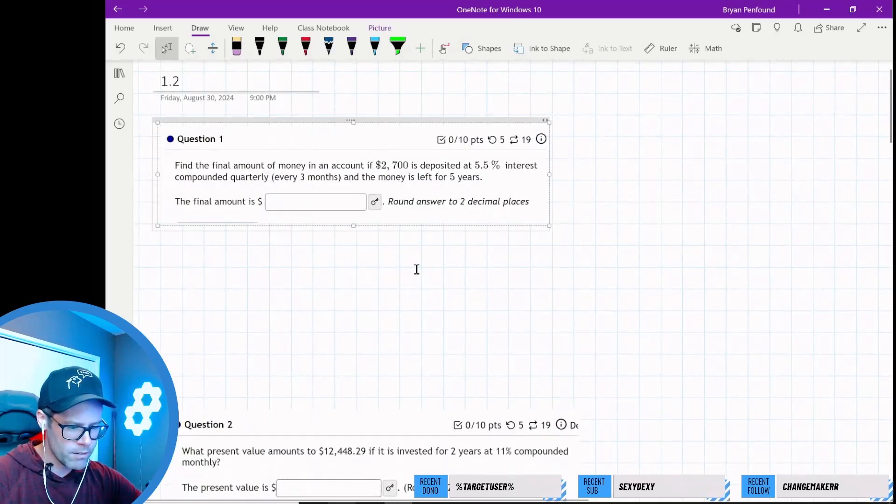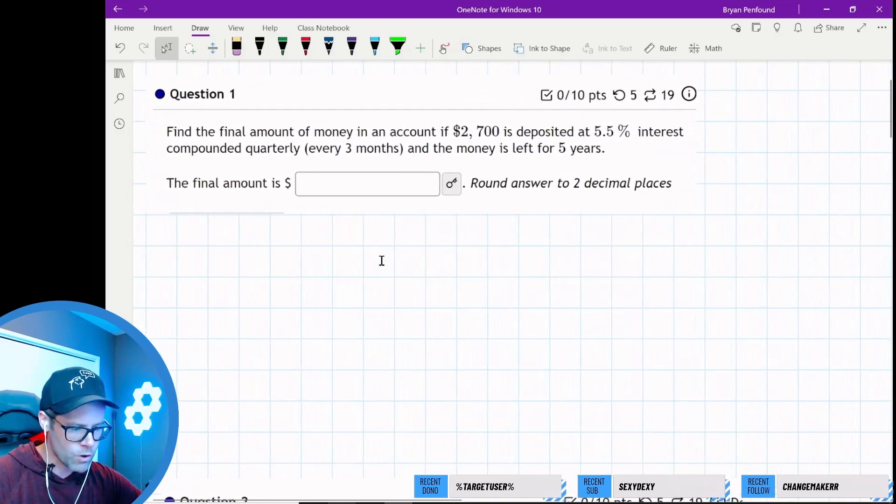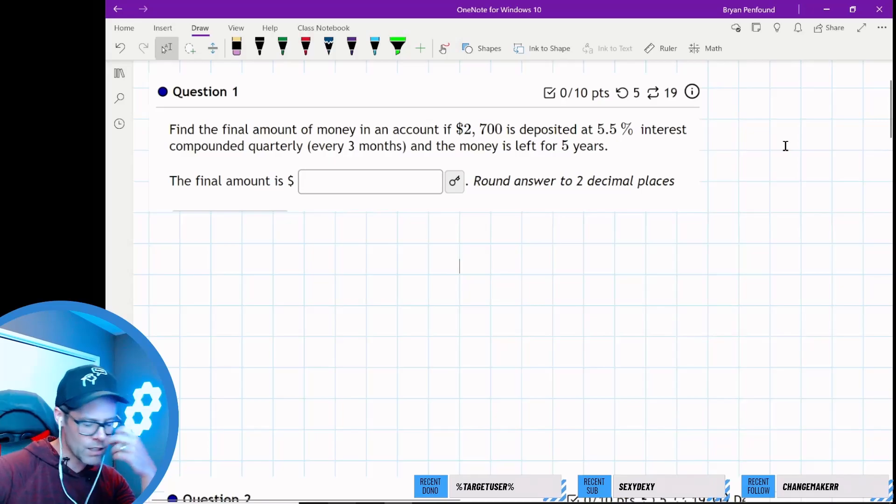In section 1.2, we get to do applications. Since this is a business-centered course, we have some business applications, so we're going to look at revenue, cost, and profit functions.